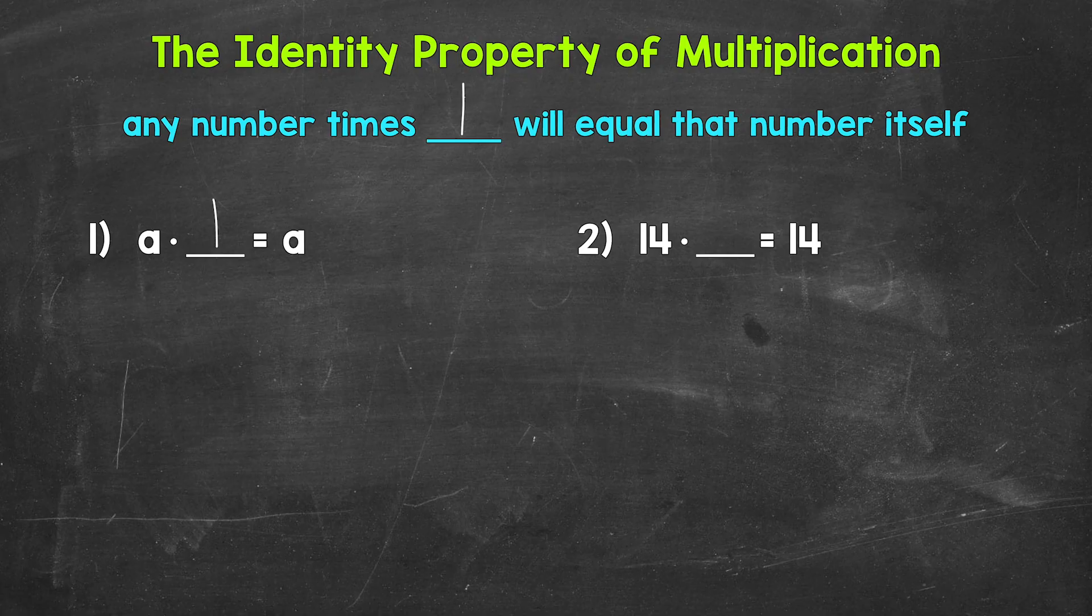Any number times 1 will equal itself. Let's move on to number 2, where we have 14 times what equals 14. So, again, how do we get this number to equal itself? Well, 14 times 1 equals 14. And that's the identity property of multiplication.